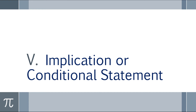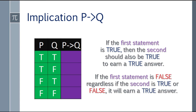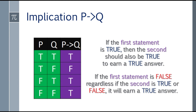The fifth topic is implication, or the conditional statement. The logical operator is the arrow. If the first statement is true, then the second should also be true to earn a true answer. If the first statement is false, regardless of whether the second is true or false, it earns a true answer. So: first row is true, second row is false (first is true but second is false), and third and fourth rows are true because the first statement is false.